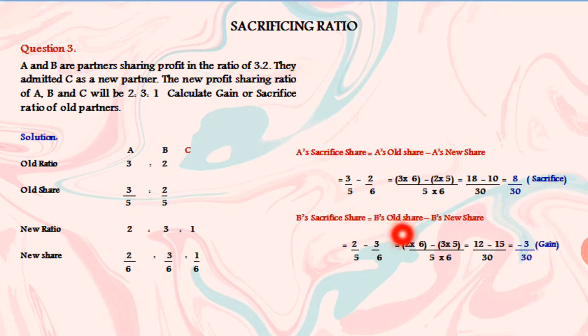Now B's case. B's old share minus new share. Old share is 2 by 5. 2 by 5 minus B's new share is 3 by 6. 2 by 5 minus 3 by 6.